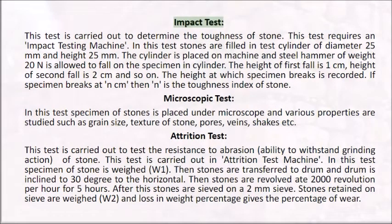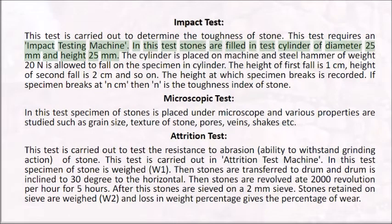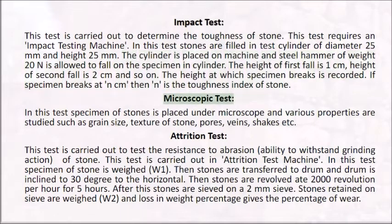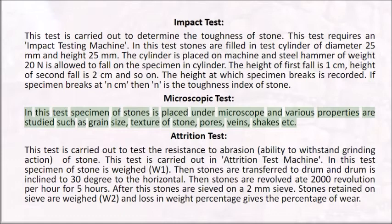Impact Test: carried out to determine the toughness of stone. Stones are filled in a test cylinder of diameter 25 mm and height 25 mm. The cylinder is placed on an impact testing machine and a steel hammer of weight 20 N is allowed to fall on the specimen inside the cylinder. The height of first fall is 1 cm, height of second fall is 2 cm, and so on. The height at which the specimen breaks is recorded. If the specimen breaks at N cm, then N is the toughness index of stone. Microscopic Test: the specimen of stones is placed under a microscope and various properties are studied such as grain size, texture of stone, pores, veins, shakes, etc.